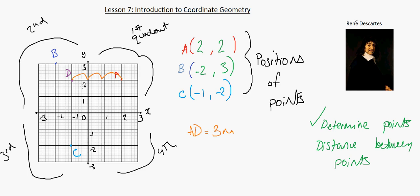Say we want the distance between D and C. Let's write C to D. We would say one, two, three, four. So this would be four meters. It doesn't really matter whether you go from C to D or D to C.